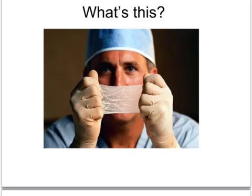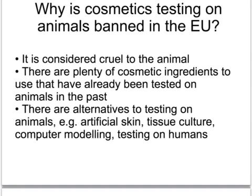Science has advanced so far that scientists can now make artificial skin. This sample of EpiSkin has been produced by a cosmetics company — yes, L'Oreal. So despite that website saying that L'Oreal are the bad guys, in fact they're the good guys, because they are one of the foremost leaders of this kind of technology. So why is cosmetics testing on animals banned in the EU? The main reason is it's considered cruel and unnecessary. There are plenty of cosmetic ingredients that have already been tested on animals in the past and which can be used quite safely in new cosmetic products. Also, technology has moved on so far that there are many alternatives to testing on animals, for example using artificial skin, computer modelling, or testing on humans straight away.